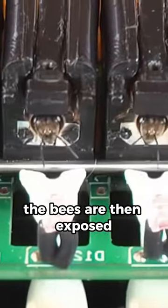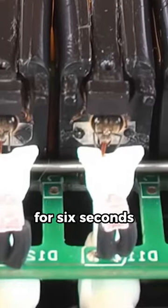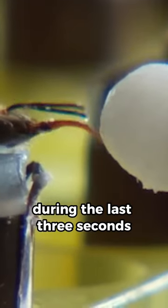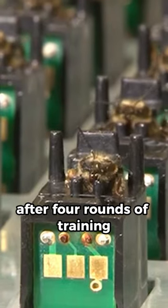The bees are then exposed to an explosive vapor for six seconds while being given a sugar water reward during the last three seconds. After four rounds of training, the bees that voluntarily stick out their tongue after receiving the explosive scent are ready for field work.